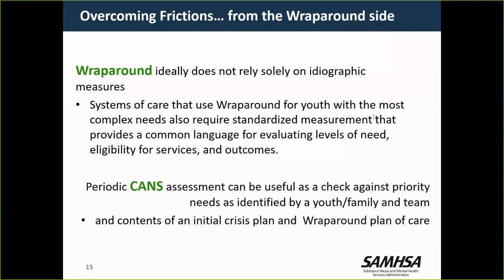Systems of care that use wraparound can benefit greatly from standardized measurement that provides a common language for evaluating levels of need, eligibility for services, and outcomes. Wraparound-based systems of care benefit from standardized assessments to inform the system about which types of needs are most common among wraparound-enrolled youth and youth across all levels of need. We want to be able to monitor outcomes across all children and families enrolled in services. And at a practice level, periodic CANS assessment can be useful as a check against priority needs as identified by youth, family, and team.